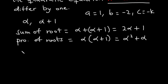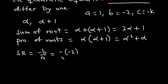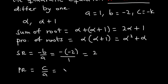Using Vieta's formulas, the sum of the roots equals negative b over a. With b equal to negative 2 and a equal to 1, that gives negative (negative 2) over 1, which is positive 2. The product of the roots equals c over a, and since c is negative k and a is 1, the product equals negative k.